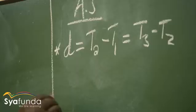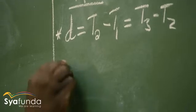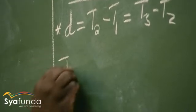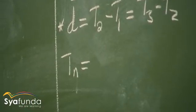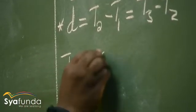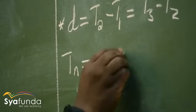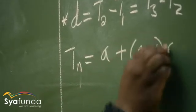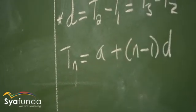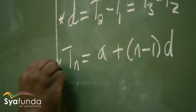We also have here the general term. T_n is equals to a plus into n minus 1 times d, which we showed you where it comes from.